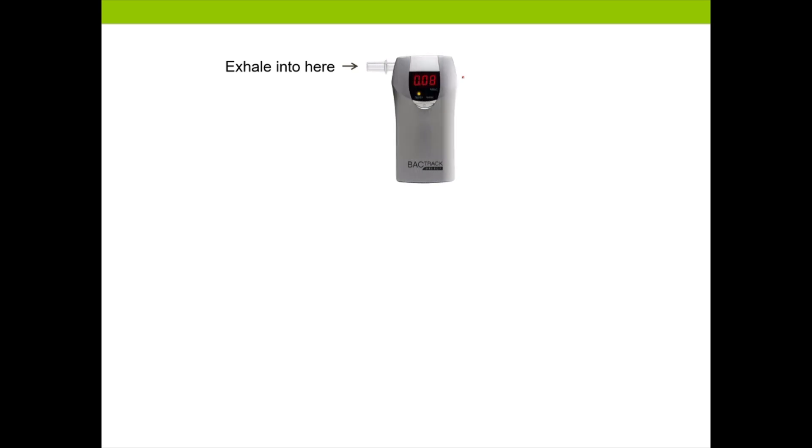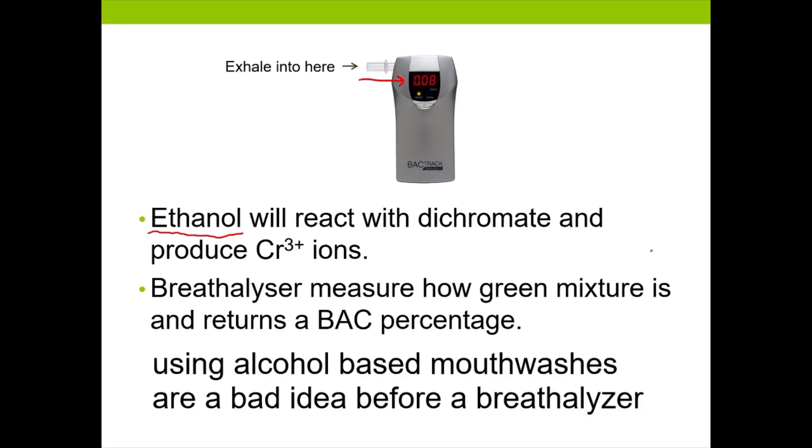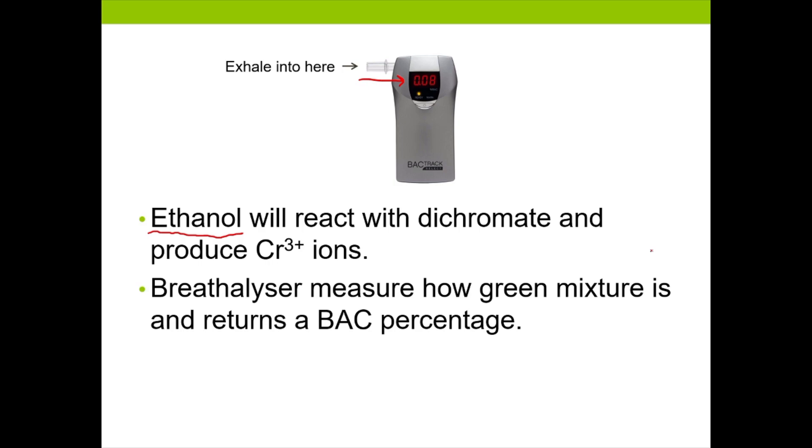When you exhale into the breathalyzer, the ethanol in your breath gets funneled into the dichromate solution. The solution will turn green and the breathalyzer will measure how green it is. Based on how green it is, it will determine just how much ethanol was present in your blood. This is usually referred to as the blood alcohol content or blood alcohol concentration, BAC. Depending on what percentage it returns back, it'll determine whether you are fit to drive or not. And that depends on what the jurisdiction determines the maximum BAC is.